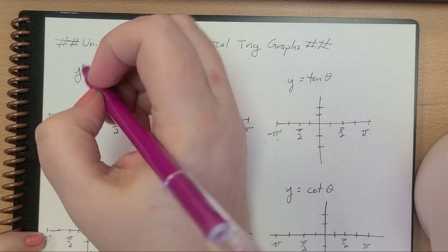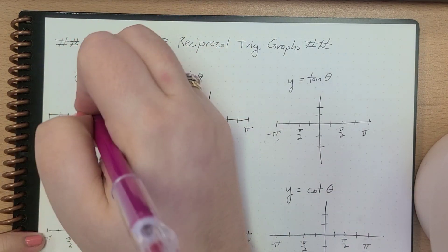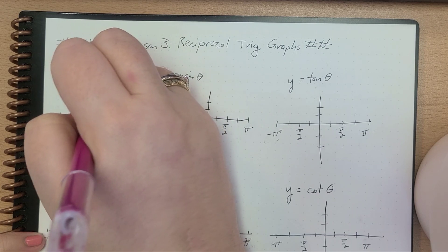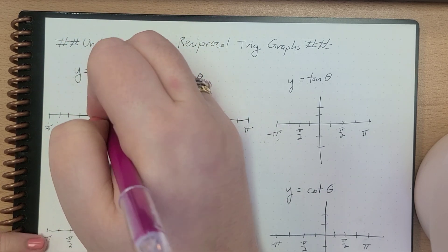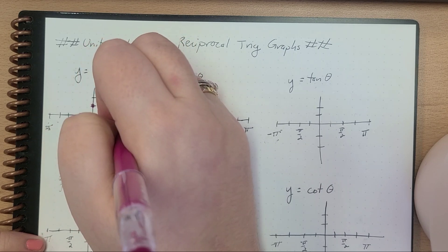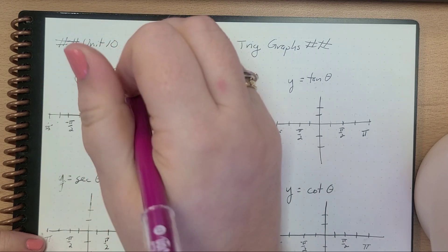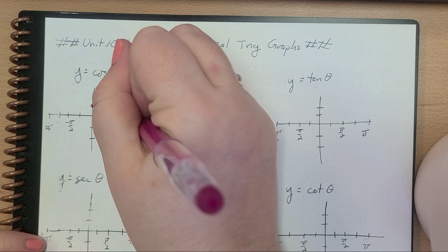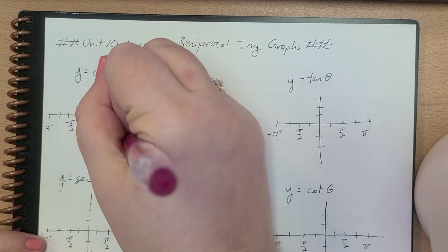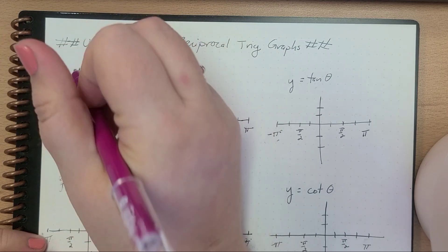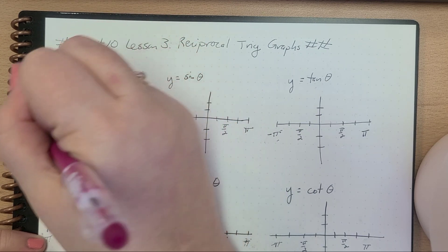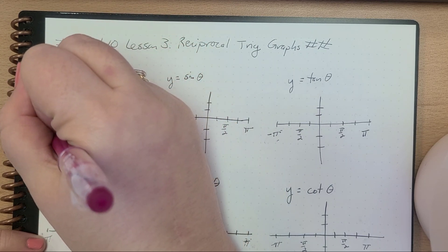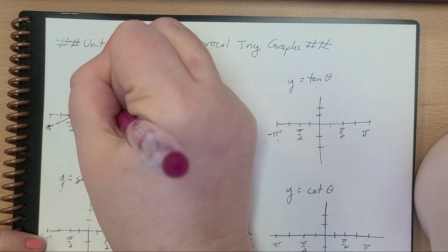So let's just do a quick reminder here. When we're talking about the graph of cosine, we've got a point here at (0, 1), a point at (π/2, 0), and a point down here at (π, 0), and then again at (0, negative 2) in here. So our graph looks something like this, and we know that that would continue on.